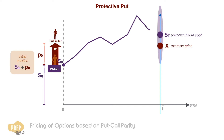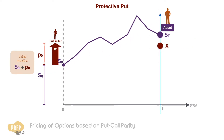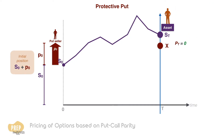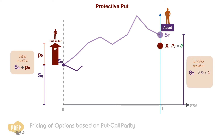At expiration, the value of the asset is St. Based on this value, the value of the put will be either 0 or x minus St. In the case where St is greater than x, the asset has performed well and the investor will let the put option expire. This means that the investor keeps the asset, which is worth St. The ending position in this case, where the put option expires out of the money, is therefore St.